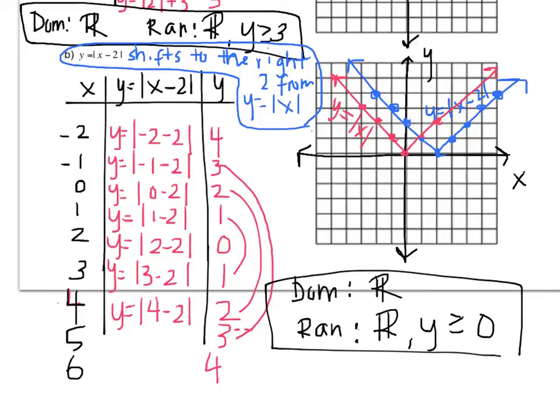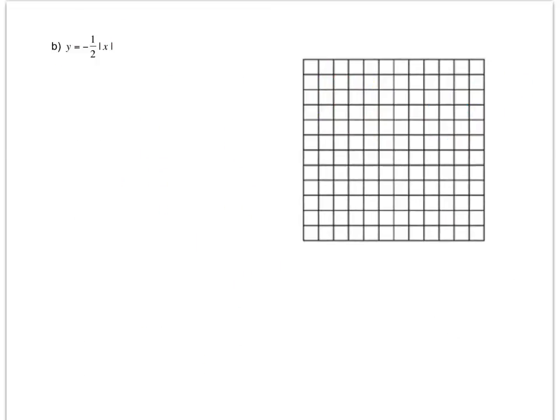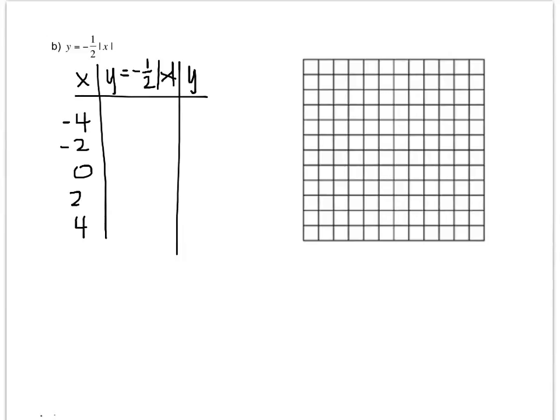Alright, we've got one more absolute value to look at. So this one has a coefficient in front of it, so let's see what that does. Let's make a table of values, and when I use my table of values, since I get to pick the numbers to choose, I'm not going to pick three or seven. I'll pick all even numbers because that will make my life a lot easier. But again, I will pick negatives and positives.